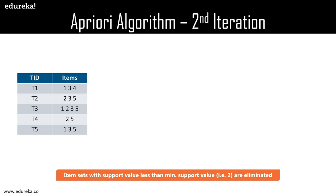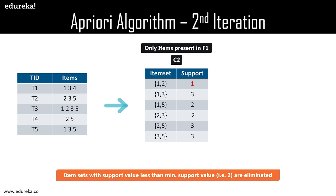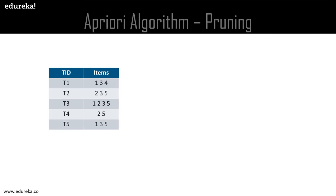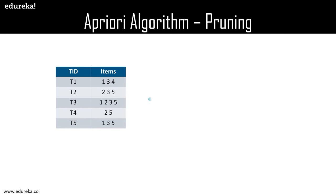The next step is to create item sets of size 2 using all combinations from F1. This gives table C2 with pairs: {1,2}, {1,3}, {1,5}, {2,3}, {2,5}, and {3,5}. Calculating support, we find {1,2} has a support of 1, which is less than the threshold, so it is discarded. The resulting table F2 contains {1,3}, {1,5}, {2,3}, {2,5}, and {3,5}. We then move forward to create item sets of size 3.